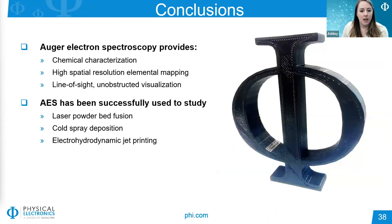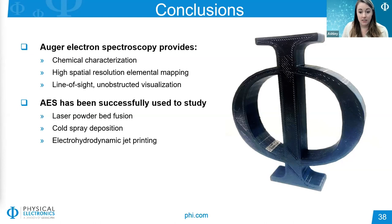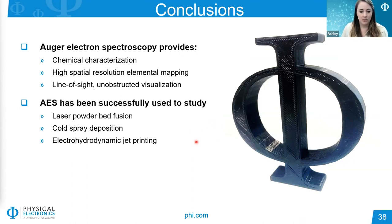In conclusion, Auger electron spectroscopy provides chemical characterization of surfaces with high spatial resolution elemental mapping, making it an ideal technique for analyzing additive manufacturing materials. The unique coaxial geometry of the 710 instrument makes it ideal for surfaces with high topography such as 3D printed objects. Laser powder bed fusion is an established technique where Auger can study grain boundary diffusion and inclusions affecting the final printed material. AES has also been used to study emerging techniques such as cold spray deposition and electro-hydrodynamic jet printing for process validation and to shed light on deposition mechanisms.